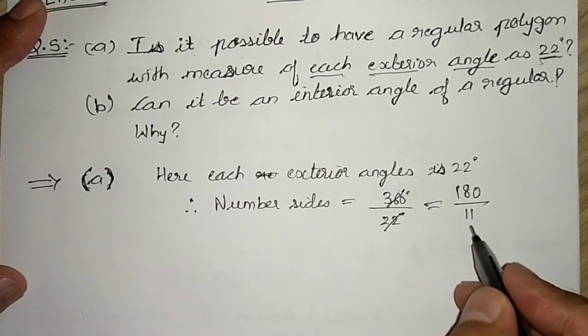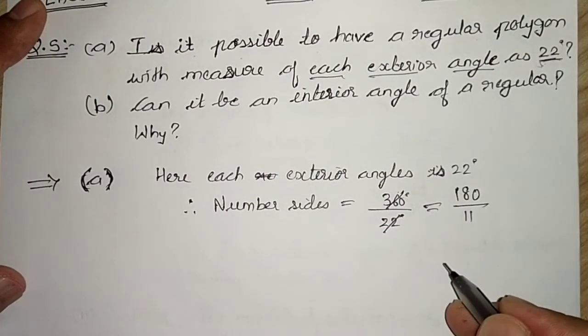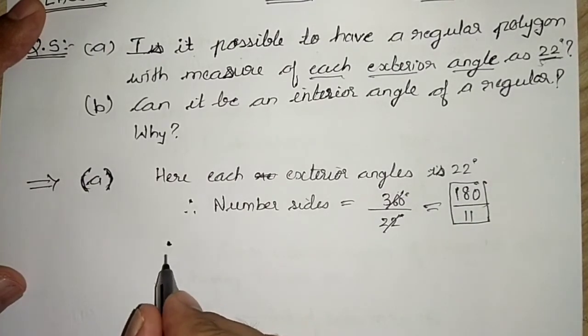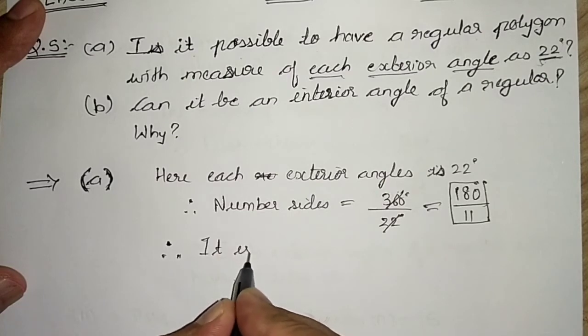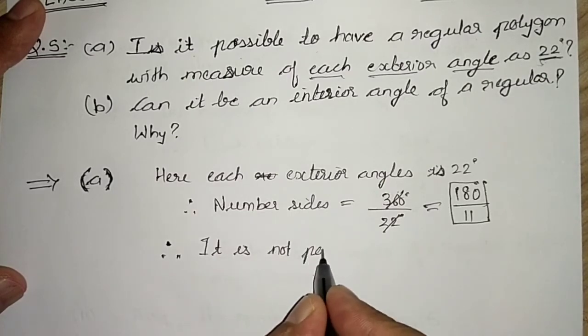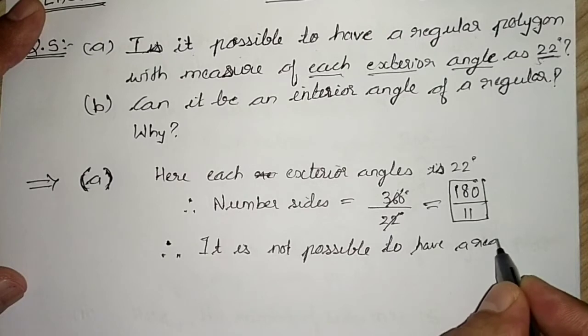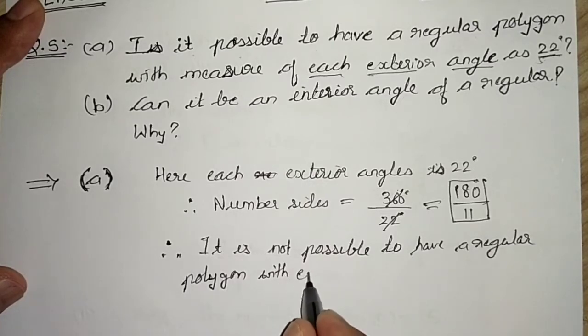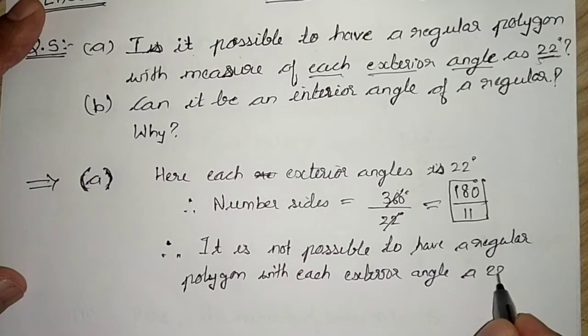If you look properly, you can't cut these numbers further. If you cut, it will be in decimal form, and if you put like this, it is in fraction form. So if the number of sides is in fraction or decimal, we can say therefore it is not possible to have a regular polygon with each exterior angle as 22 degrees.